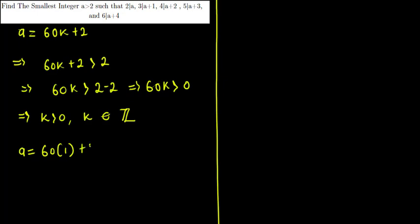Therefore a equals 60 times 1 plus 2, which equals 62. The smallest integer a greater than 2 satisfying all the conditions is 62.